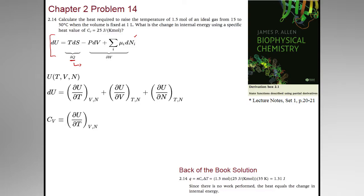For a specific process, required to raise the temperature of 1.5 moles of an ideal gas from 15 to 50 degrees Celsius when the volume is fixed at one liter. And then what is the change in internal energy used to specify the heat to using a specific heat value of heat capacity at constant volume of 25 joule per k mole?